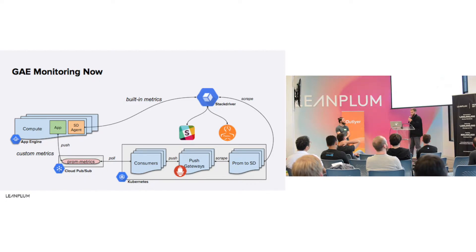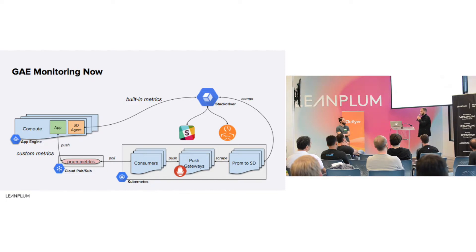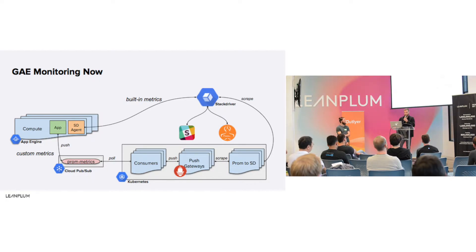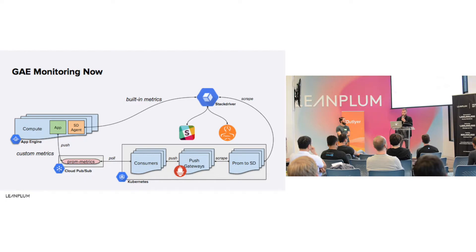What we set up to get custom metrics out of Stackdriver: from our app, we push metrics from a Prometheus collector registry on the instance. We zip all that up and push it to Google Cloud PubSub — which is just a message broker — once a minute for each instance. Then on the Kubernetes side, we wrote a custom consumer that subscribes to that PubSub topic. When messages come in, it unzips the content and forwards the metrics payloads to our Prometheus push gateways.